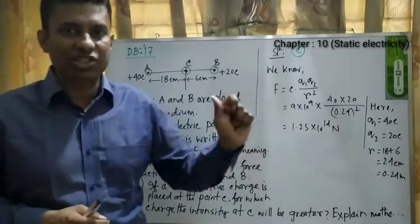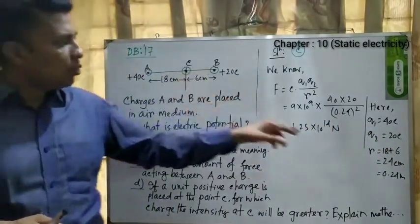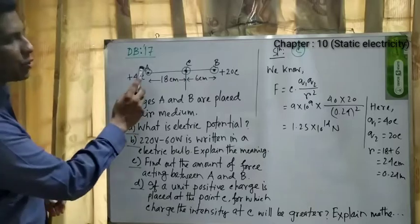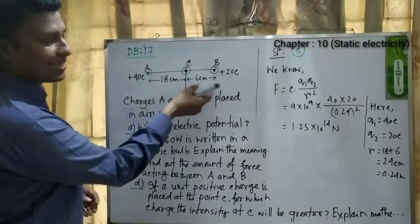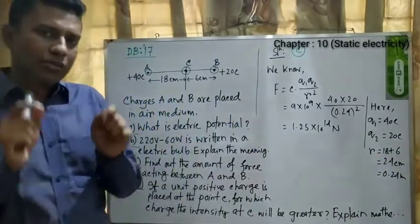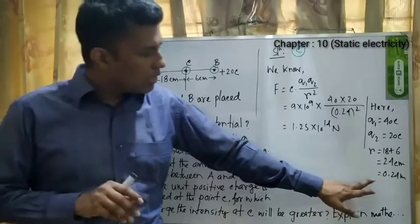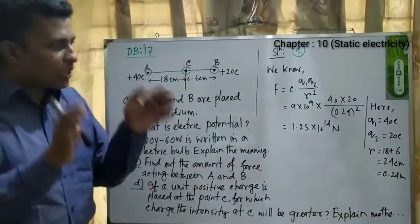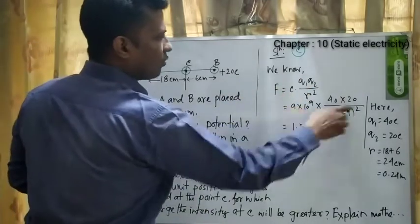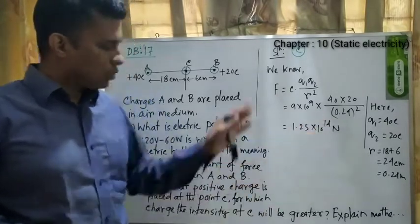Q1 is +40 Coulomb, Q2 is +20 Coulomb. The distance between A and B is 18 + 6 = 24 centimeters, which converts to 0.24 meters. After putting in the values of Q1, Q2, R, and k, the result is 1.25 × 10⁴⁰ Newton.